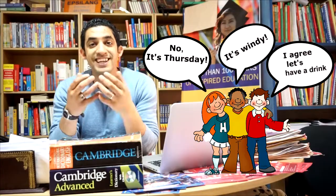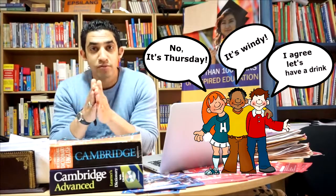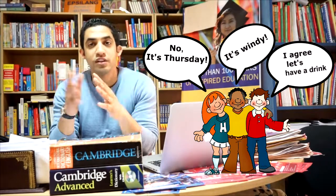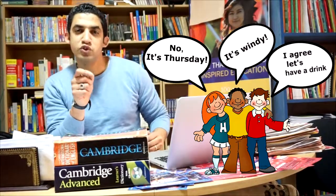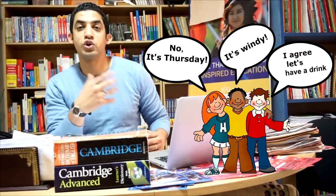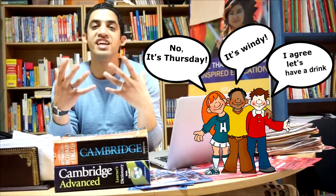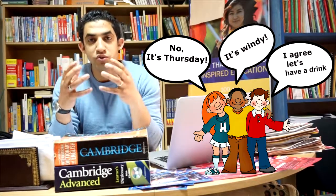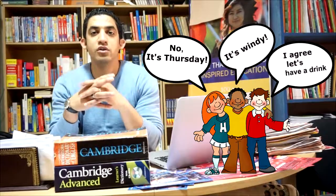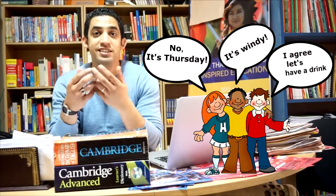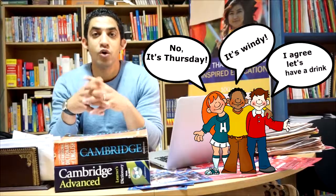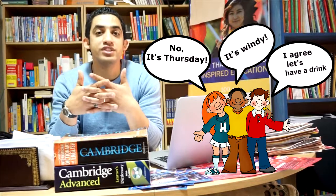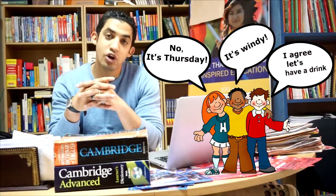In fact, these students are English language learners. Each one of them has a phonological or linguistic background which is different from the other. What happened is the first student was not talking about days but he was talking about the weather. He said it's windy, he didn't say it's Wednesday. And the second student misunderstood the first and thought he was talking about days. That's why he said it's Thursday. While the third one misunderstood the second, he thought that he said thirsty, not Thursday. That's why he said I agree, let's go and have a drink.